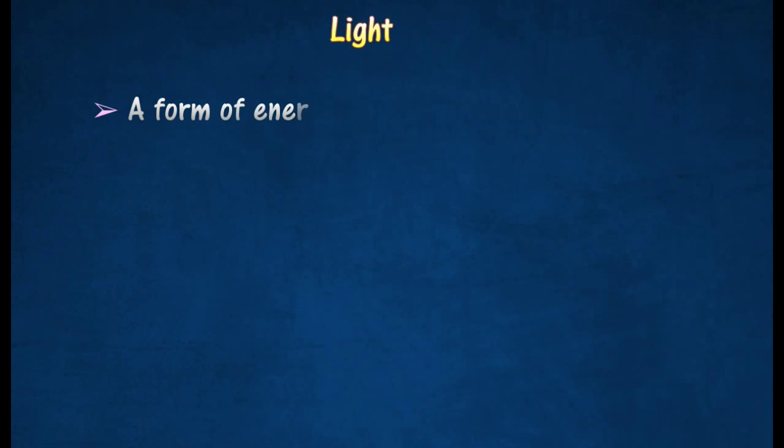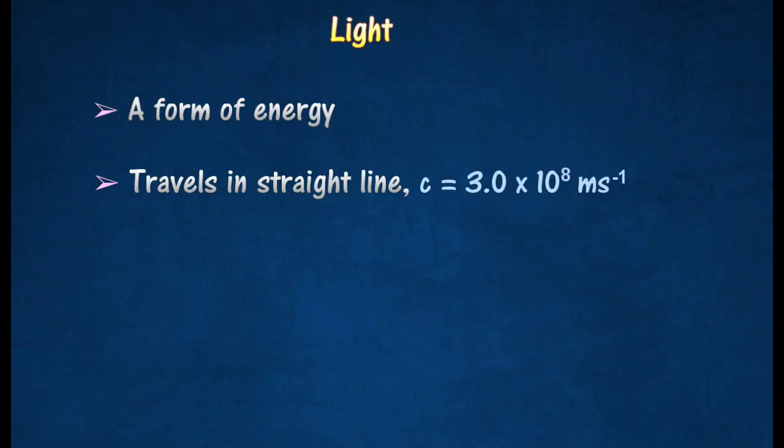Light is a form of energy. In a vacuum, it travels in a straight line at a constant speed, C, called the speed of light, where C equals 3.0 times 10 to the power of 8 meters per second.